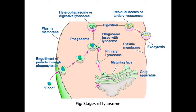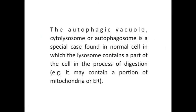Residual bodies or tertiary lysosomes: these are the lysosomes in which only indigestible food materials have been left due to incomplete digestion. The residual bodies pass outwardly and fuse with the plasma membrane to throw out the debris into the external environment by exocytosis. The autophagic vacuoles or cytolysosome or autophagosome is a special case found in normal cells in which the lysosome contains a part of the cell in the process of digestion, for example a portion of mitochondria or endoplasmic reticulum.